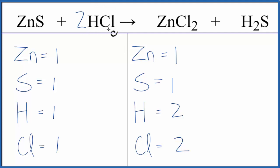And this two, it applies to everything. So we have one chlorine times the two, that equals two, and then the hydrogen, one times the two, that equals two.